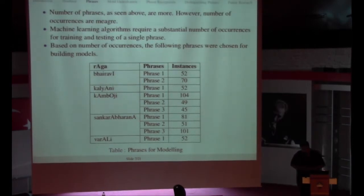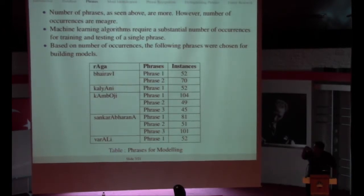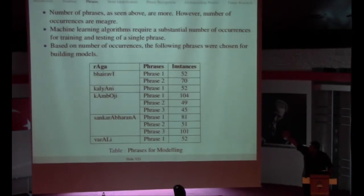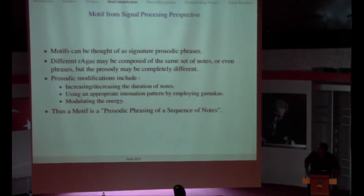For machine learning algorithms it's really important to have a large number of occurrences of one type of phrase. So I narrowed down my search to the phrases which are occurring a lot of times in a certain Alapana section. So I found out that these phrases had so many occurrences, and I started looking for these phrases alone and marking them. The analysis was performed on these phrases. Now our perspective on a motif is that motifs can be thought of as signature prosodic phrases. Prosody in this context means the increase and decrease in duration of notes, the usage of appropriate intonation patterns by employing gamakas and modulating energy. So it's pitch, duration and energy.